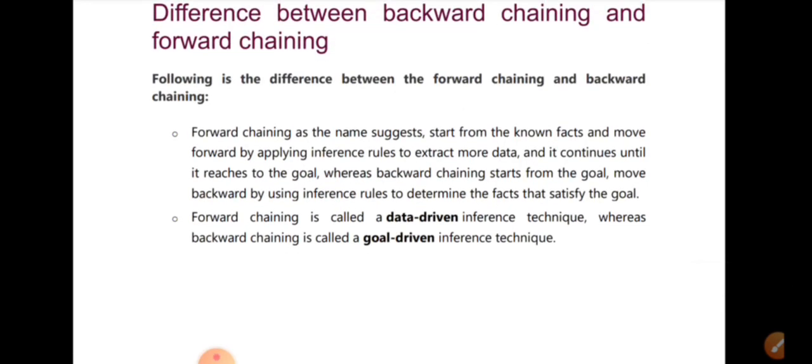Forward chaining, as its name suggests, starts from known facts and moves forward by applying inference rules to extract more data, continuing until it reaches the goal. Whereas backward chaining starts from the goal and moves backward by using inference rules to determine the facts that satisfy the goal.